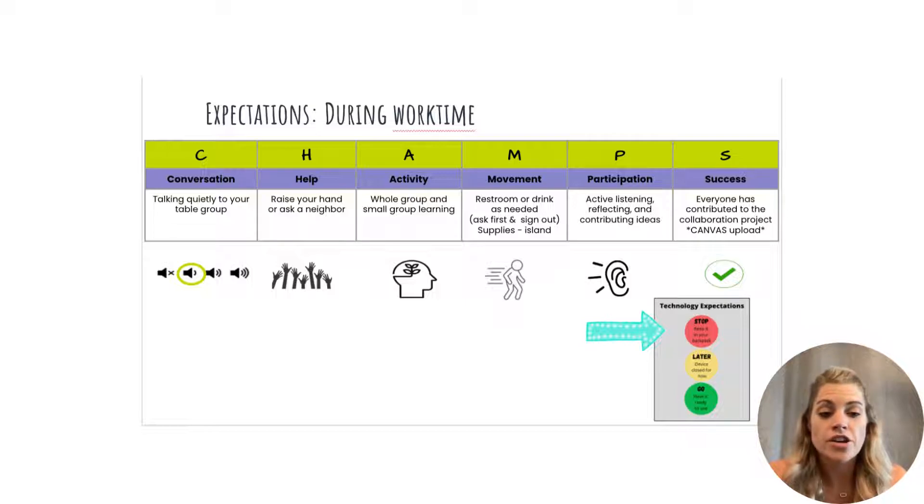All right. I know you all are super excited to get started, but let's talk about some expectations going forward for during work time. You should be talking quietly at your table, getting to know one another and starting that planning process for your project. If you need help, just raise a hand or you could ask a neighbor. We'll be learning about each other and making that plan and completing our actual worksheet. If you need to use the restroom or get a drink, just ask first, make sure you sign out. And if you need supplies, they're at the Center Island. Just make sure you return anything that you use. We'll know that you're participating because we can see if you're actively listening, contributing ideas, and actually working together. And your success will be determined on how well you guys collaborate and your Canvas upload.